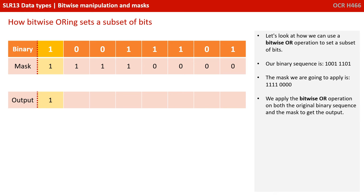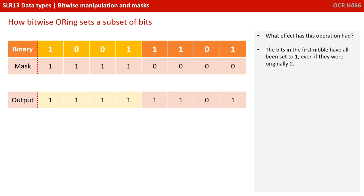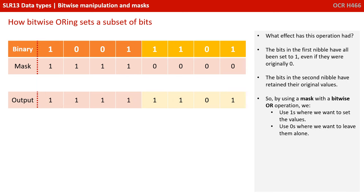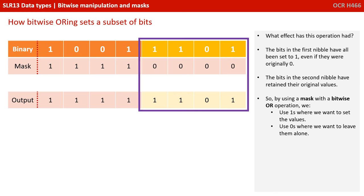With OR, only one of the two bits has to be a 1 for the output to be 1. So: 1 OR 1 is 1; 0 OR 1 is 1; 0 OR 1 is 1; 1 OR 1 is 1; 1 OR 0 is 1; 1 OR 0 is 1; 0 OR 0 is 0; 1 OR 0 is 1. The bits in the first nibble have all been set to 1, even if they were originally 0. The bits in the second nibble have retained their original values. Using a mask with a bitwise OR operation, we use 1s where we want to set the values and 0s where we want to leave them alone.